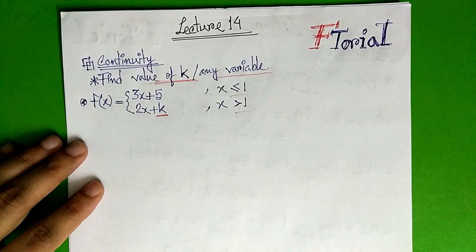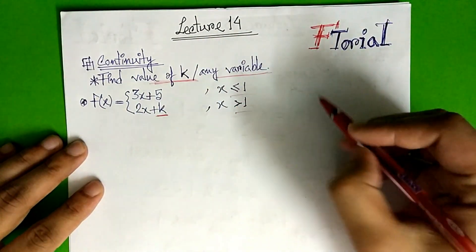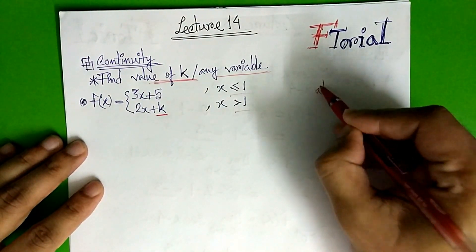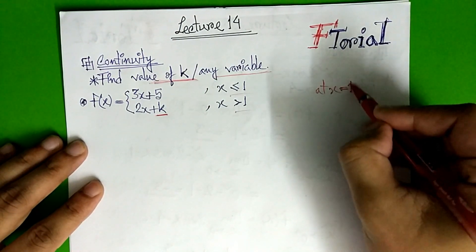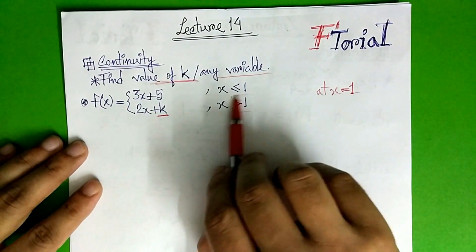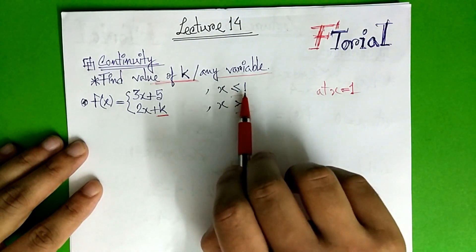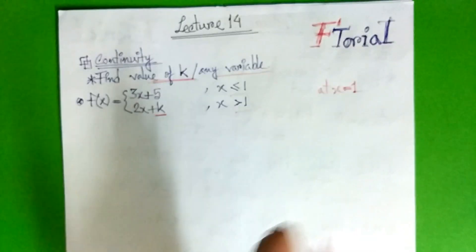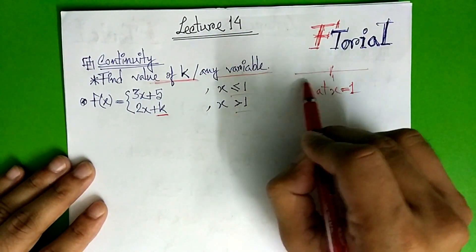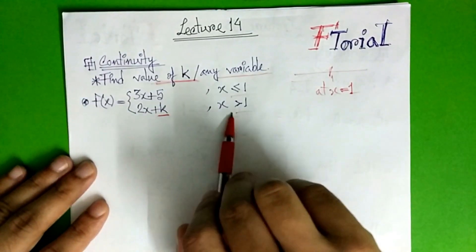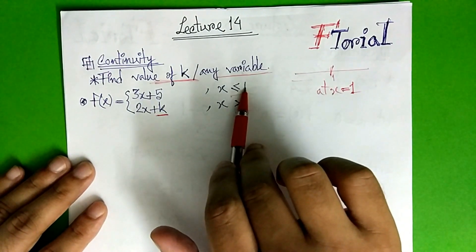The limit at x equals 1. The limit is equal to 0; 1 equals 2. At x equals 1, the left hand side is a function. This is 1.